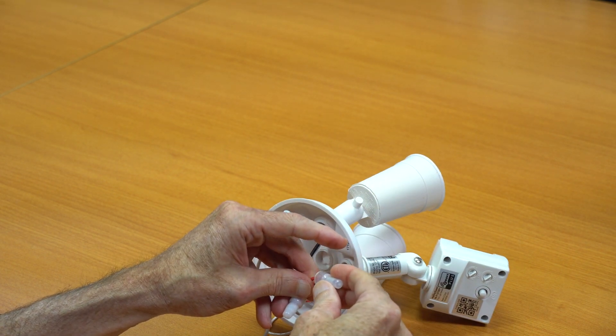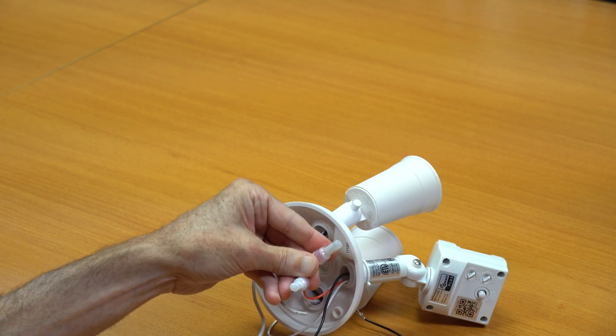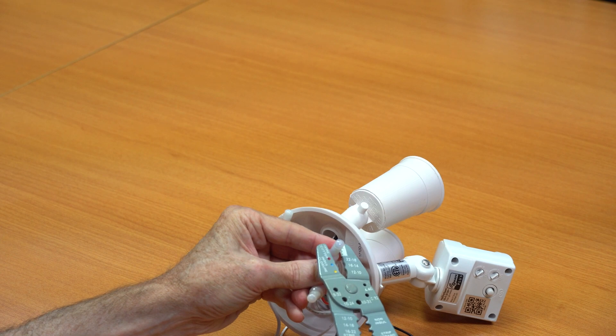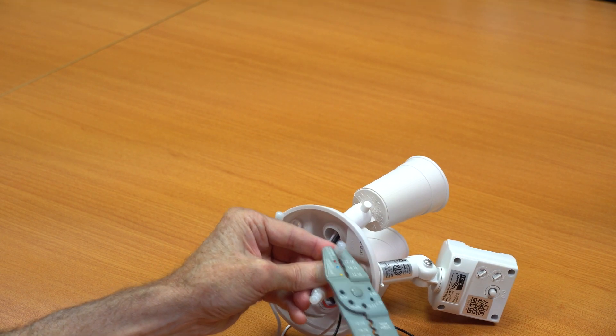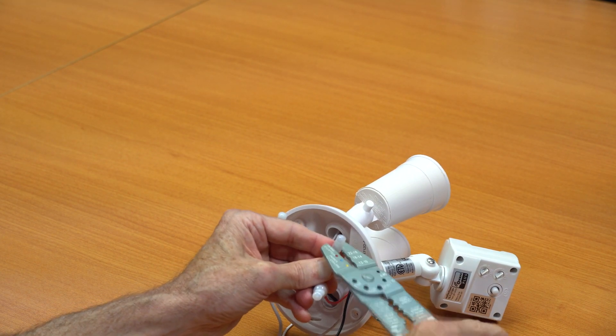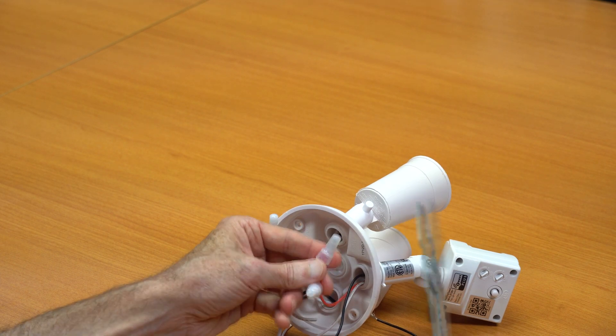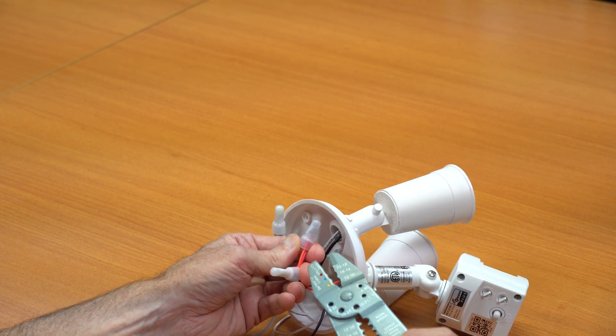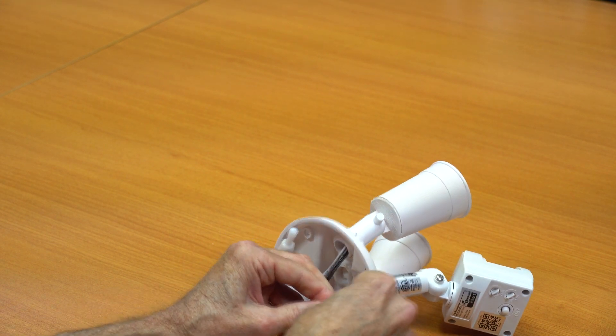Here's one of the crimp connectors. It just goes over the connection. There's a metal band on the inside of the crimp connector. Just put that in the crimper, squeeze, and that will secure the connection. Once that's done, just try to pull the wires out to make sure that the connection is secure.